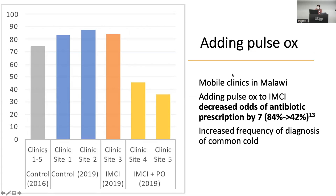One study by UCSF faculty in Mozambique added only a pulse oximeter and found it decreased odds of antibiotic prescription by sevenfold — dramatically dropping how comfortable providers were prescribing antibiotics to respiratory patients with a normal pulse oximetry, and increasing diagnosis of 'just a cold' rather than pneumonia. One issue was limited follow-up, but most patients who had a week follow-up were fine so there didn't appear to be a large negative impact.